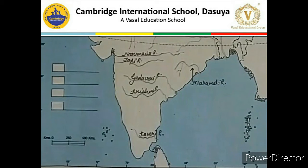Now let's talk about the Tapi basin. The Tapi river rises in the Satpura ranges in the district of Madhya Pradesh. That means Narmada and Tapi basin both originate in the district of Madhya Pradesh. The Tapi river flows in a rift valley just parallel to the Narmada, but it is shorter in length. Its basin covers parts of Madhya Pradesh, Gujarat, and Maharashtra.